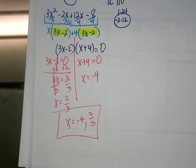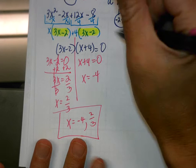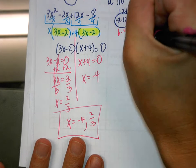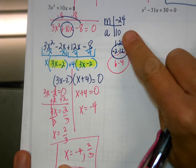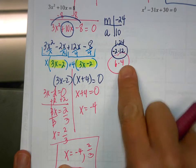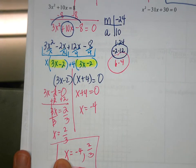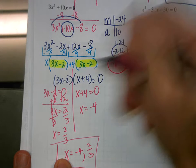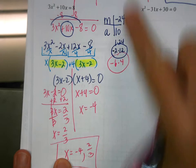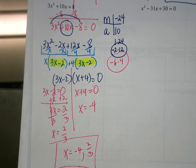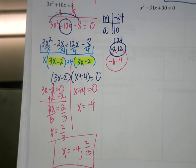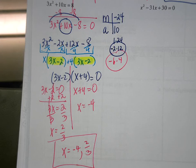Wouldn't it matter if you use 6 and 4? Yes — if you use 6 and 4, when you add them they make 10, but when you multiply them it makes a positive 24. So with negative 6, that would work for multiplying, but when you add it makes negative 2. Sometimes there are two numbers that will make the value you're looking for, so you have to be careful to see which one actually fits both conditions.